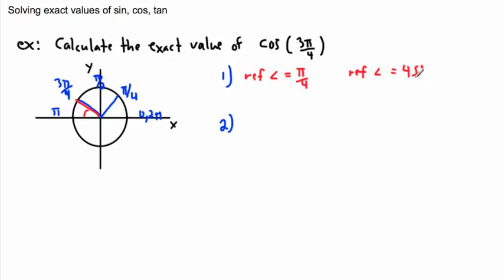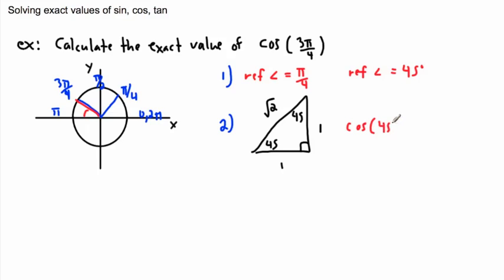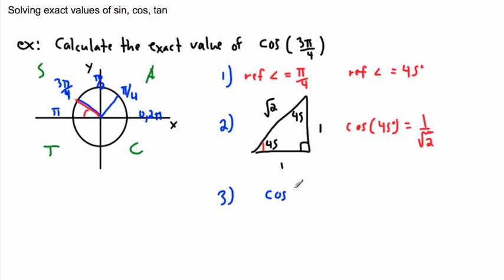Step two: I use the 45-45-90 special triangle, which goes 1, 1, root 2. I want cosine of 45 degrees. Cosine is adjacent over hypotenuse — that's 1 over root 2. Now checking quadrants: I'm in the second quadrant, where only sine is positive. I'm doing cosine, not sine, so my answer is negative. Cosine of 3π over 4 equals negative 1 over root 2.